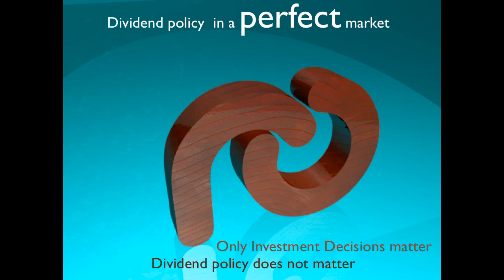Many people suggest cutting dividends is a bad idea because shareholders don't like it. However, Modigliani and Miller have an answer: homemade dividends. If you invest in positive NPV projects, the share price rises. Shareholders can then sell some of their shares to realize a profit, effectively creating their own dividend. By selling shares, shareholders can make homemade dividends if they wish.